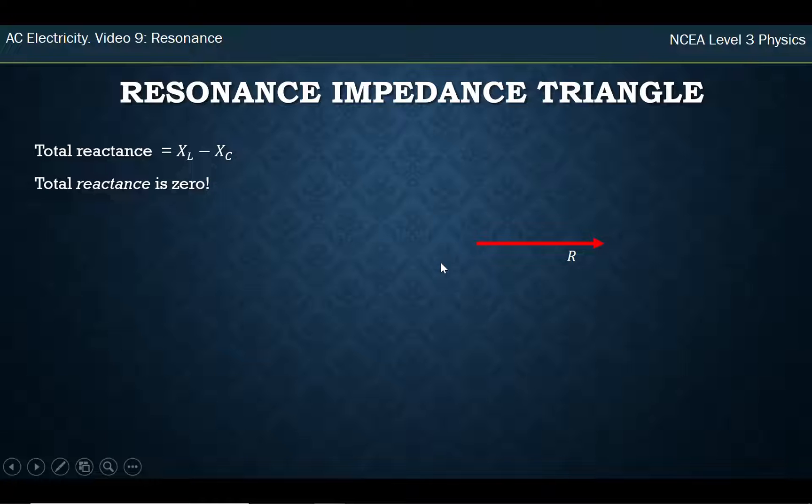So I'm left with the only total resistance in the circuit, which is just the normal resistor. And so impedance, which is my name for total resistance in an AC circuit, is just given by this. And that's the minimum it can possibly be because I've canceled two arrows out.